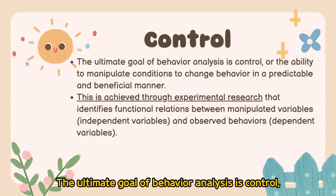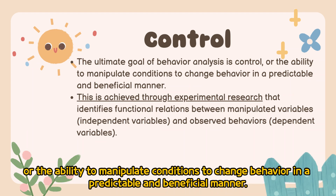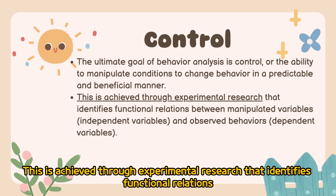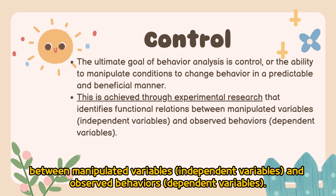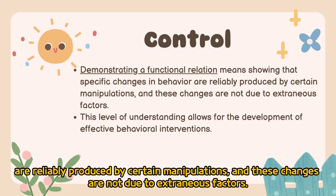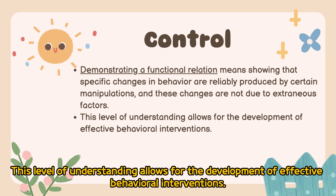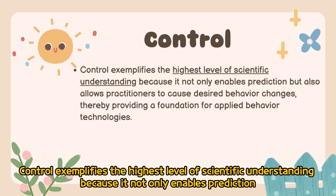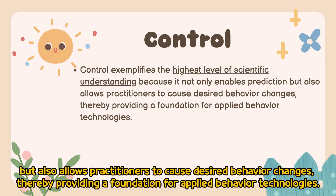Control: The ultimate goal of behavior analysis is control, or the ability to manipulate conditions to change behavior in a predictable and beneficial manner. This is achieved through experimental research that identifies functional relations between manipulated variables — independent variables — and observed behaviors — dependent variables. Demonstrating a functional relation means showing that specific changes in behavior are reliably produced by certain manipulations, and these changes are not due to extraneous factors. Control exemplifies the highest level of scientific understanding because it not only enables prediction, but also allows practitioners to cause desired behavior changes, providing a foundation for applied behavior technologies.